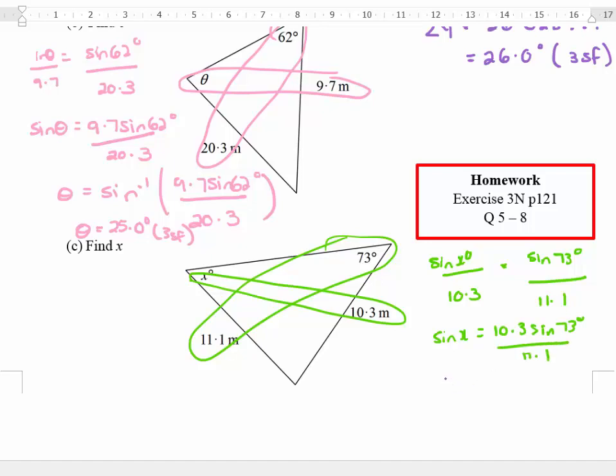And because I'm finding x in this case, I'm going to go shift sine and put all of these numbers in my calculator over 11.1. And the calculator gives me 62.546 and some other numbers, which is 62.5 degrees to 3 significant figures.